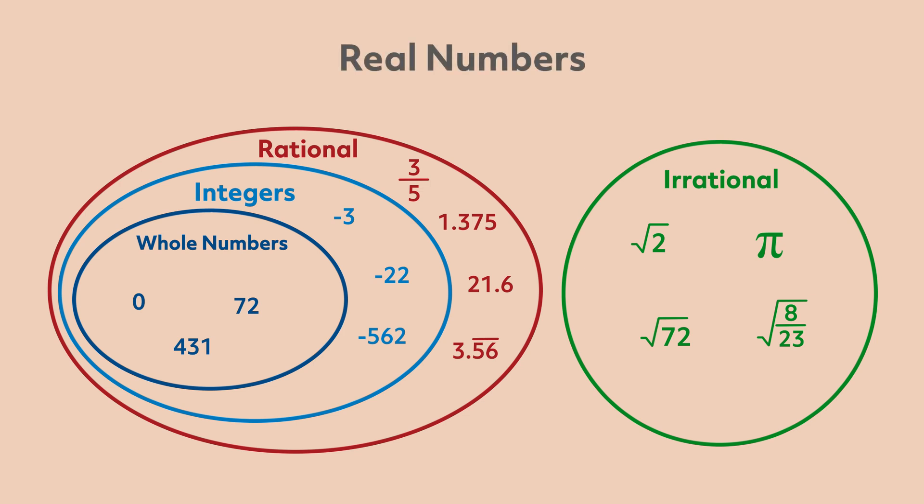A common example of an irrational number is the value derived from taking the square root of a non-perfect square. That may sound confusing, so let's look at a few examples to simplify the terminology.